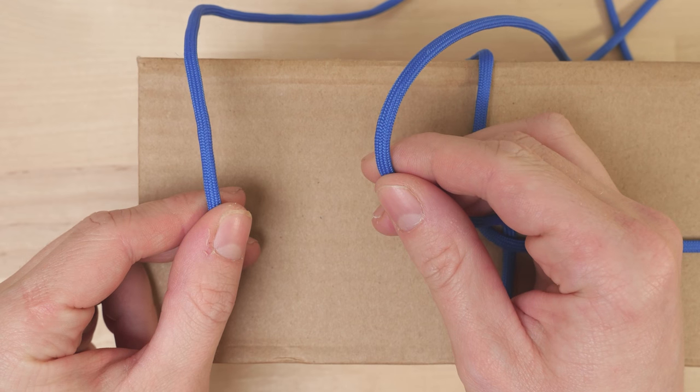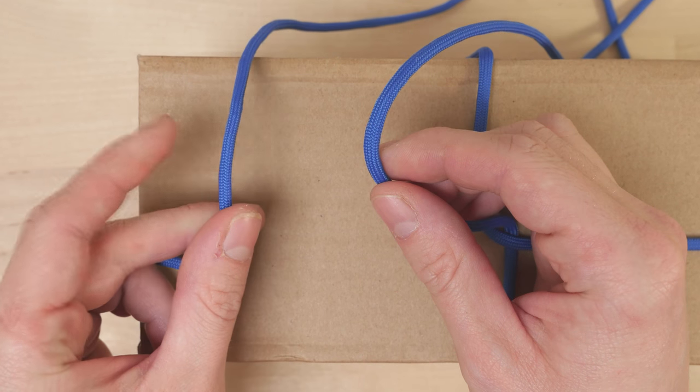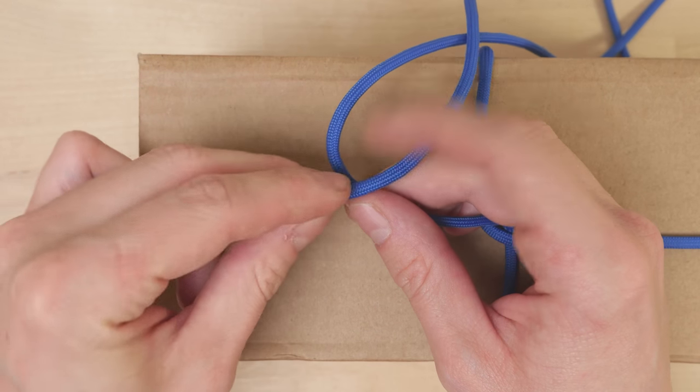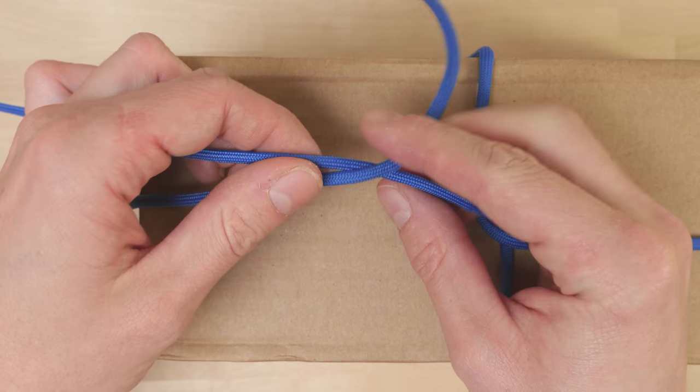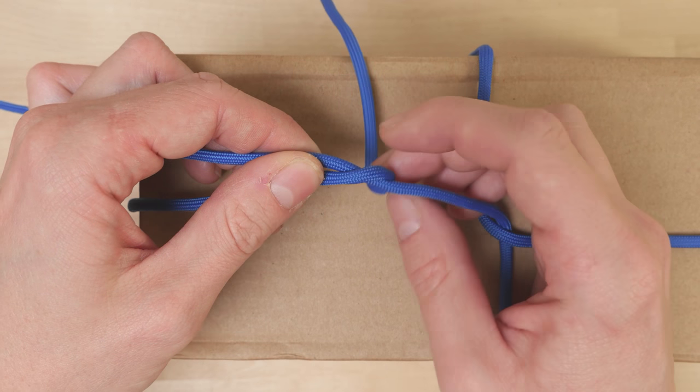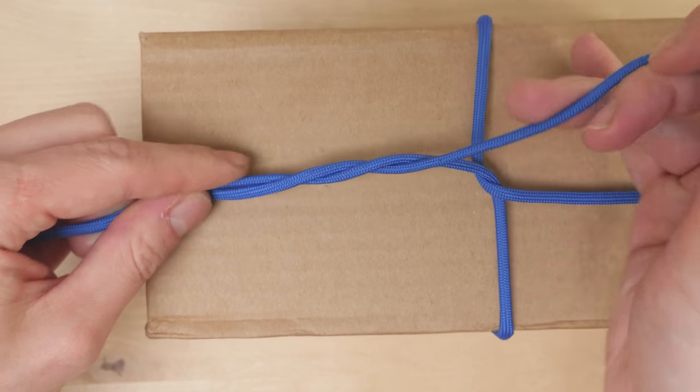An up close demonstration of the reef knot just in case. The left strand goes over the right strand. Then we do a wrap around the right strand. This creates a half knot.